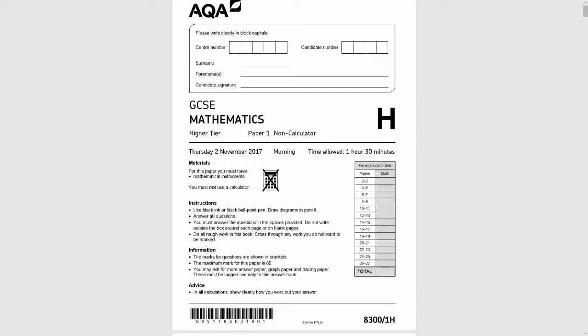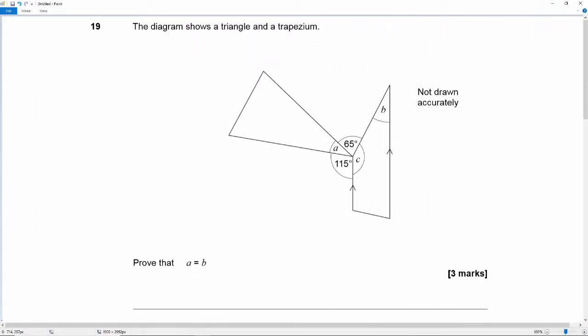This is a non-calculator paper and we're picking up in question 19 which reads: the diagram shows a triangle and a trapezium. We've got a triangle, we've got a trapezium. Prove that A equals B for three marks.